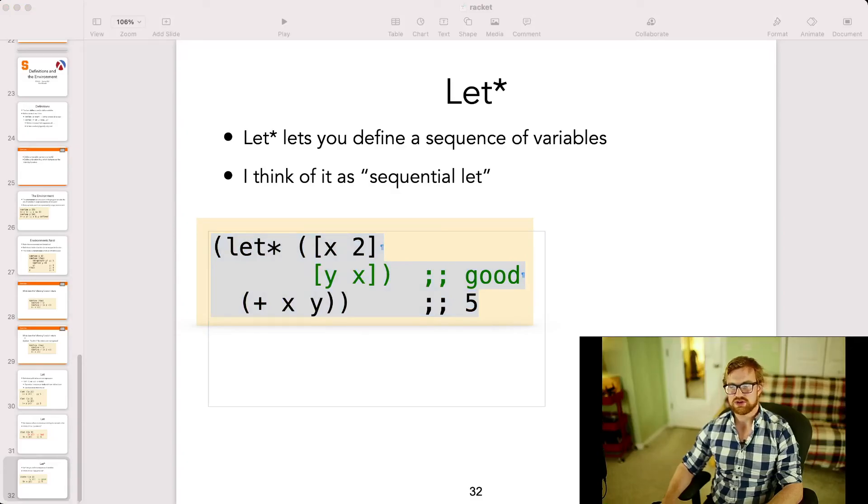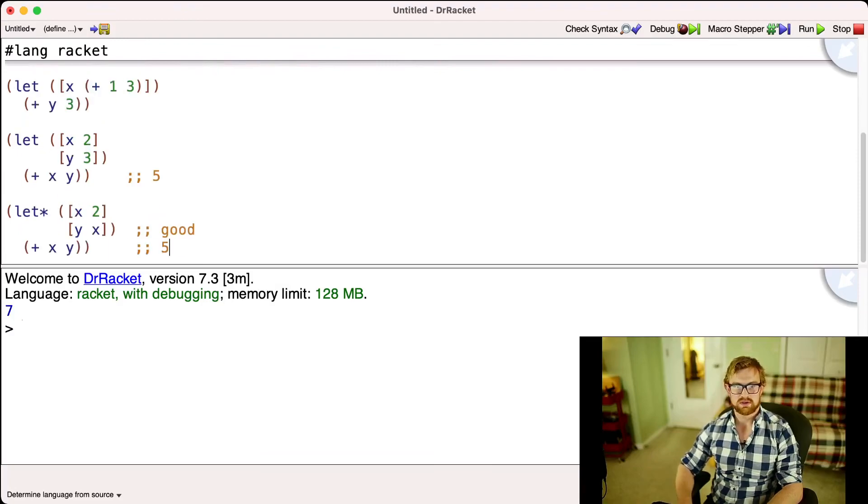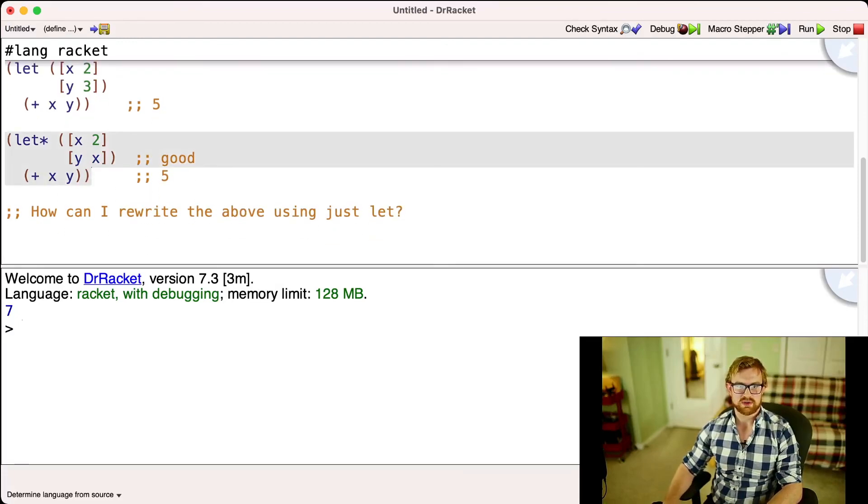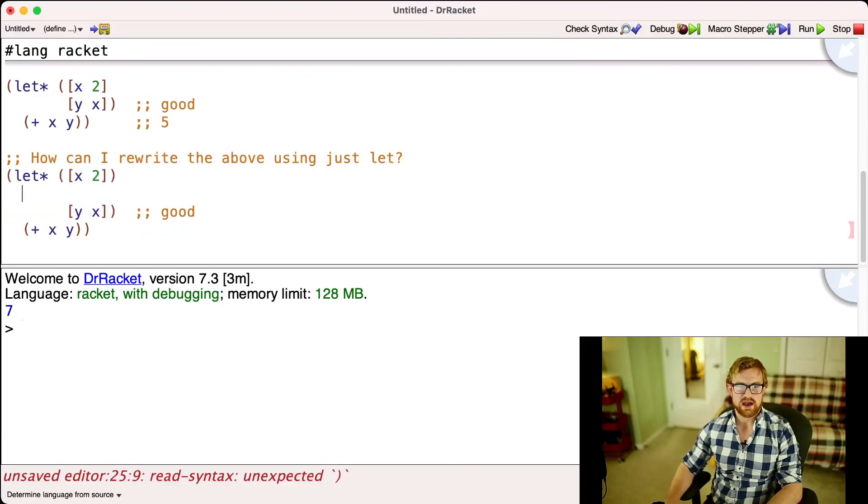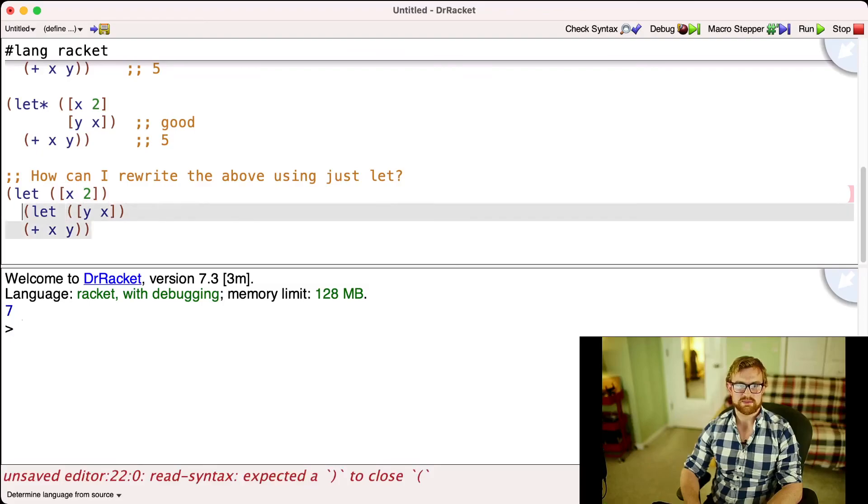Now let me ask you, if you didn't have let star, would you be able to still get this same behavior? Well, it turns out you can. All you have to do is you have to use let creatively. So how can I rewrite the above using just let? Well, what I'm going to do is I'm going to take and factor out each definition into a separate let statement. So now, because the body of this top level let then becomes another let, I can now bind x being in scope, referring to this top level binding, since this is now the body of this let right here.